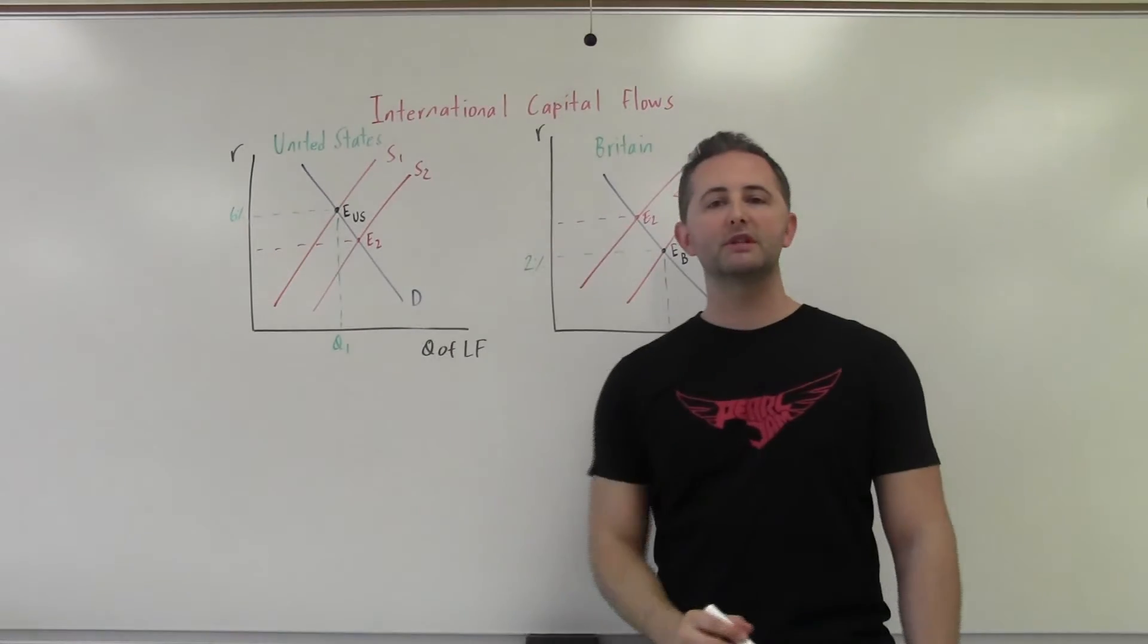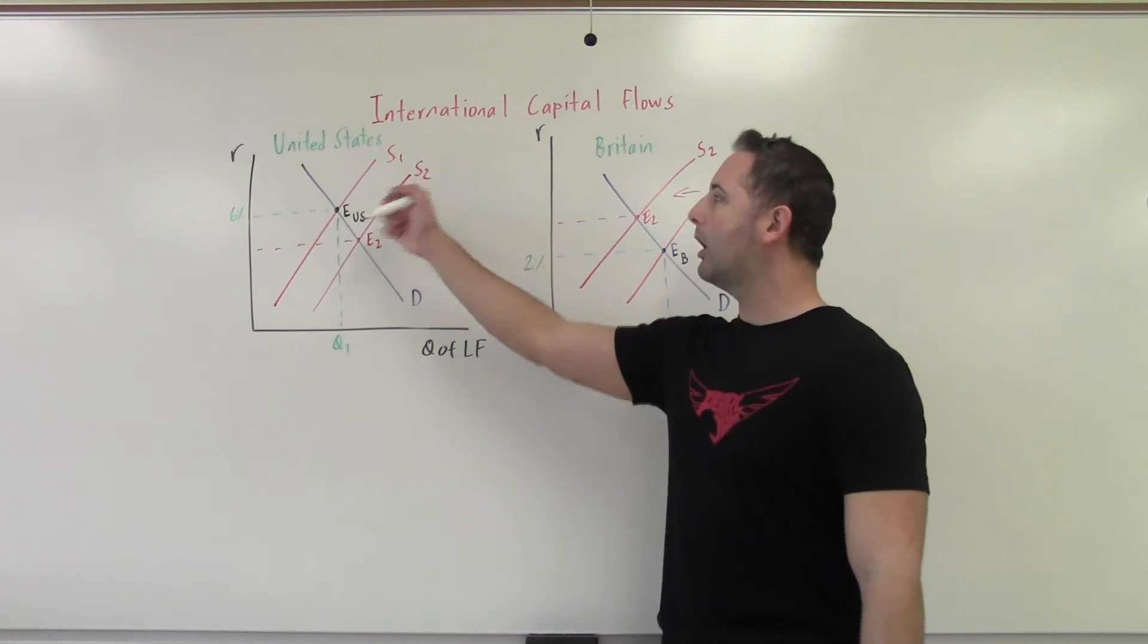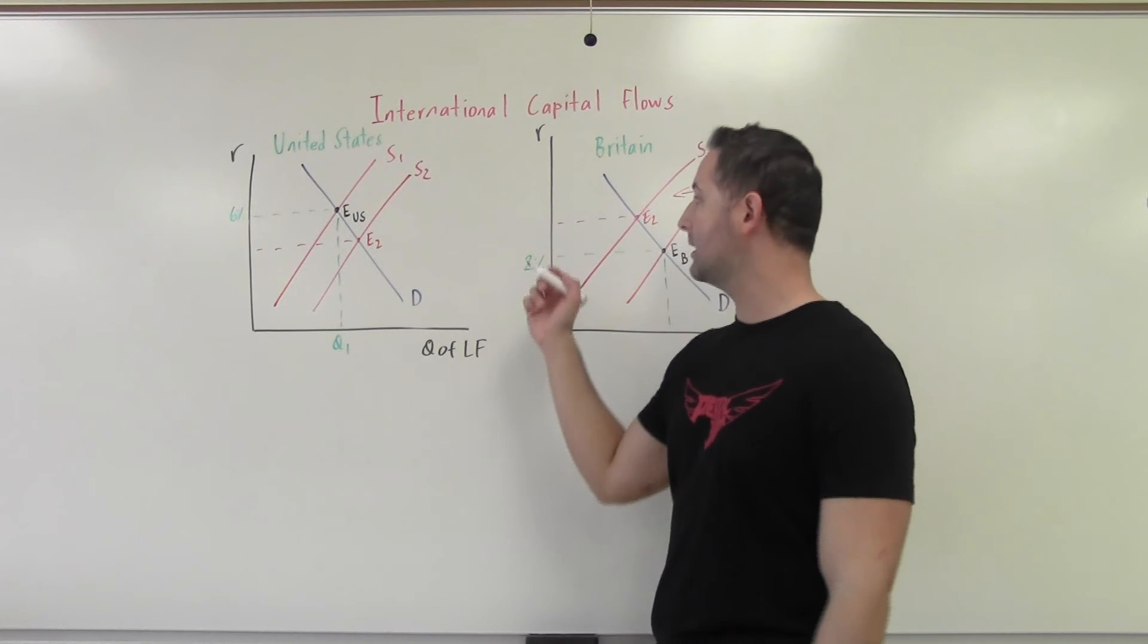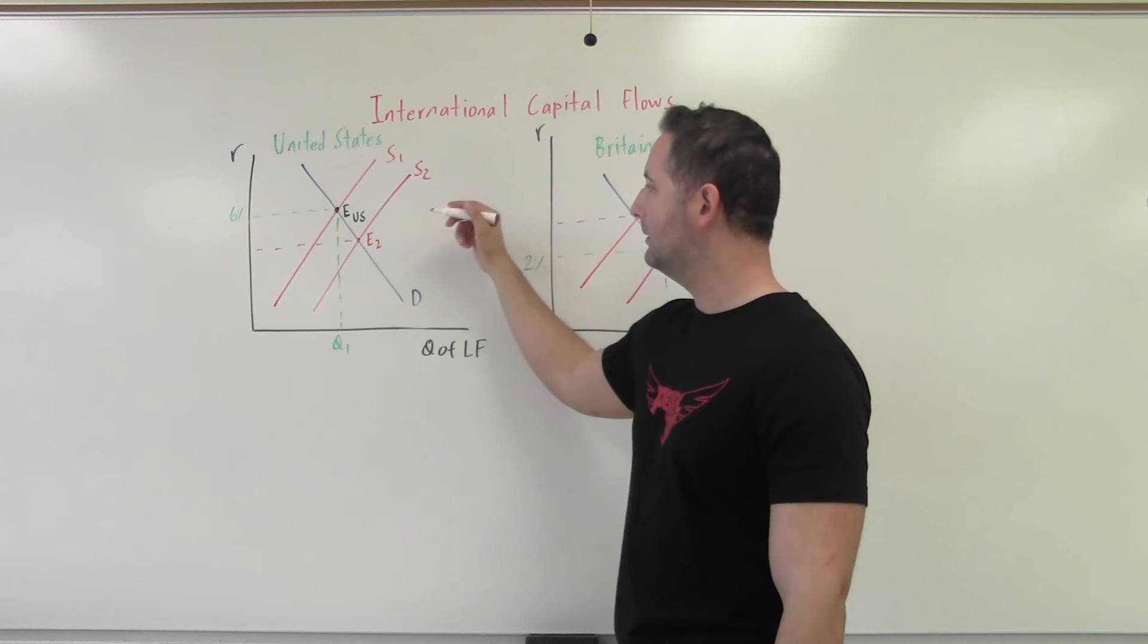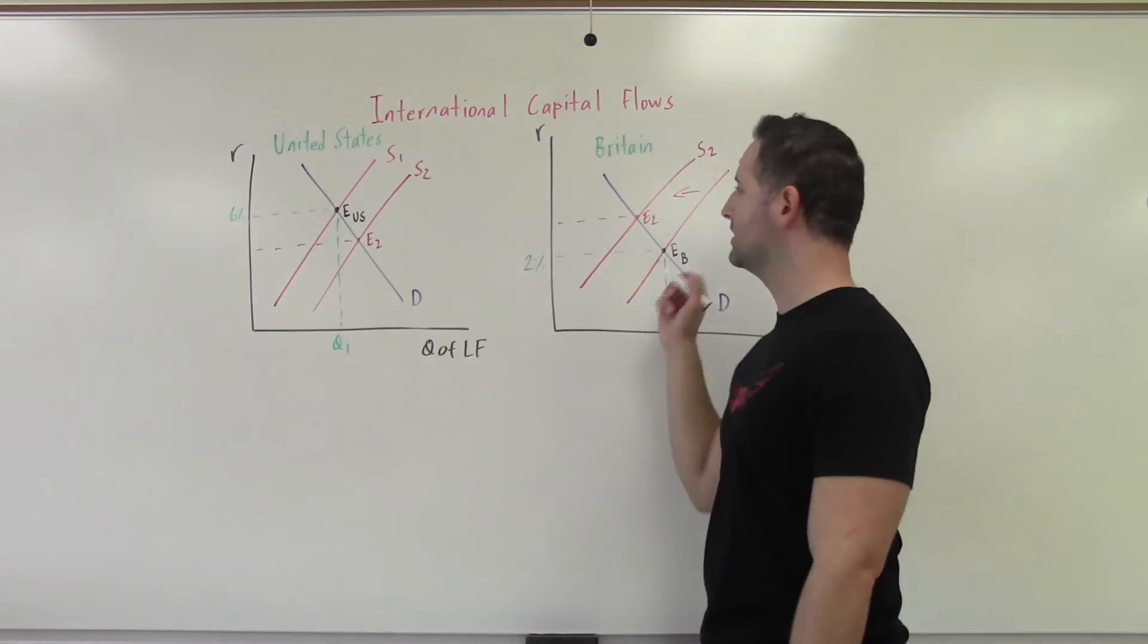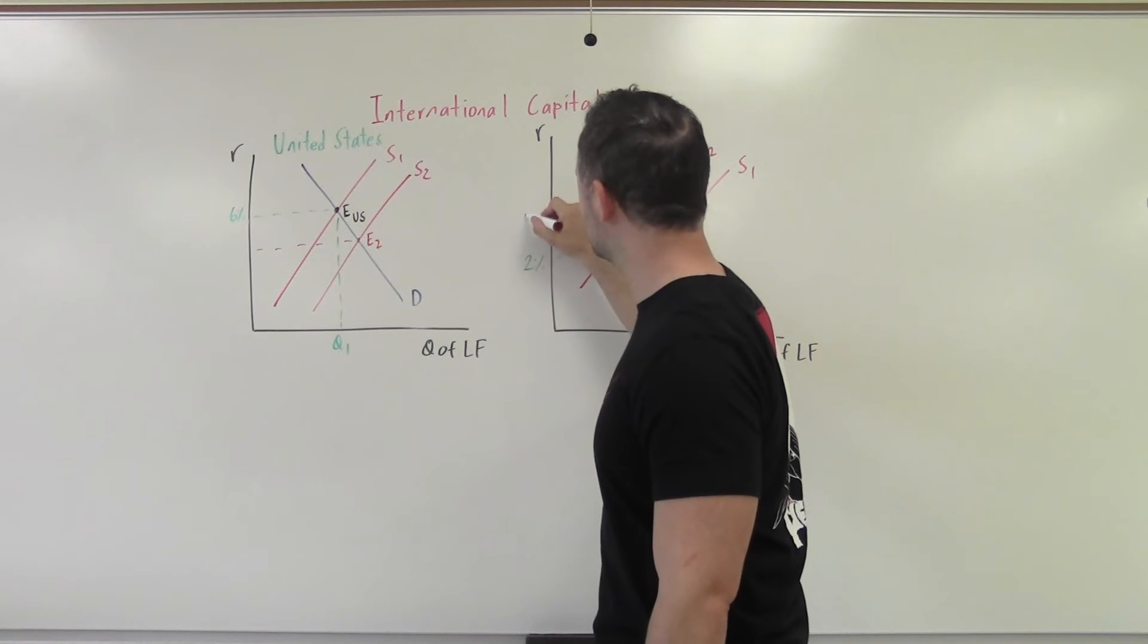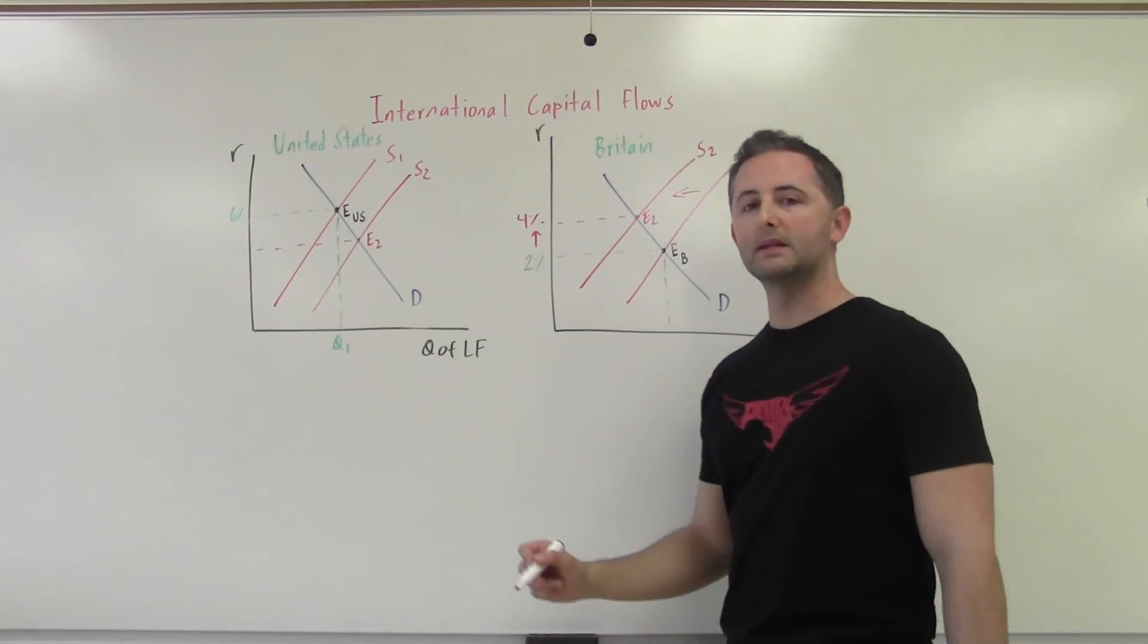So what's happened here is that the interest rates have changed. And the question is, where exactly do they go? Here is the idea. As long as there is a difference between these interest rates, as long as they are not exactly the same, the money will flow. British investors are going to keep sending their money out until there's no reason to do so anymore. The only time that there wouldn't be a reason for them to send their money out anymore is if these two interest rates are equal. So they are going to find and meet somewhere in the middle. We're going to say 4% in this example.